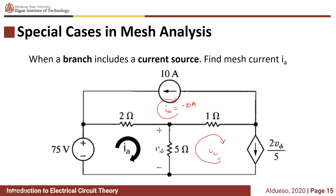Same with mesh IC — we have a current source in this branch. Even though this is a dependent current source, it is still included in this special case. The mesh current IC is equivalent to the value of this dependent current source.